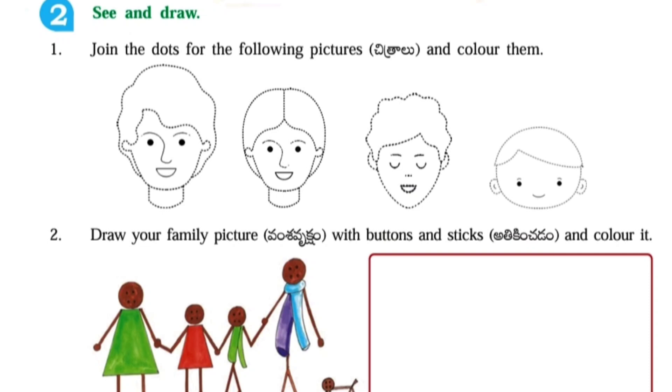See and Draw — Join the dots for the following pictures and color them. You have to join these dots and color the pictures.